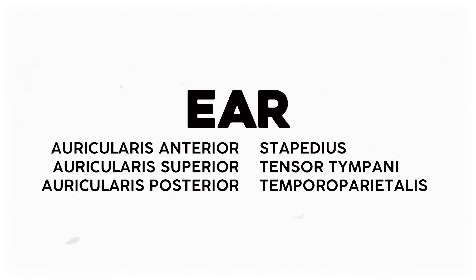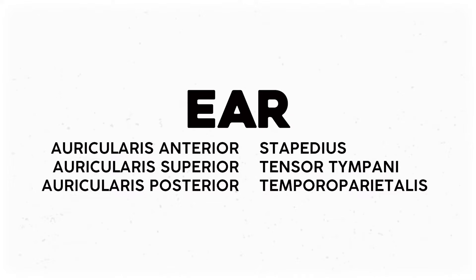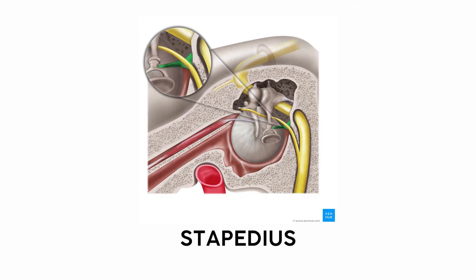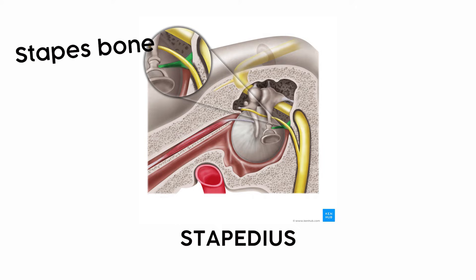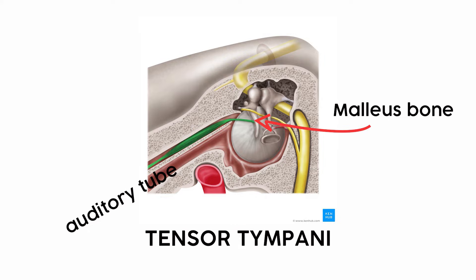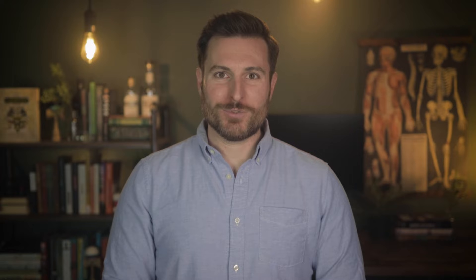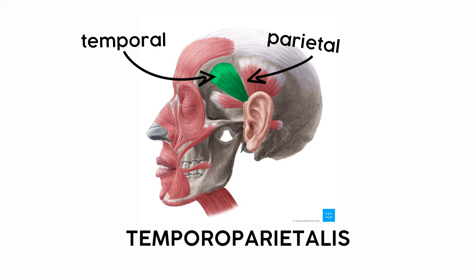Next up are the ear muscles, some of which are remnants of evolution — very few people can voluntarily flex these and move their ears. On the sides of the skull, attached to the outer ear, are three auricularis muscles: auricularis anterior, auricularis superior, and auricularis posterior — simply directional terms plus auricularis, the regional term for ear. Inside the ear are two more: the stapedius, the smallest muscle in the body, named because it stabilizes the stapes bone; and the tensor tympani, which protects the eardrum by pulling on the malleus to put tension on the tympanic membrane. Finally, the temporoparietalis sits between the temporal and parietal regions and attaches to the ear.